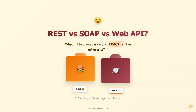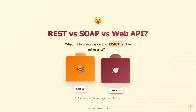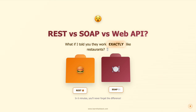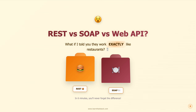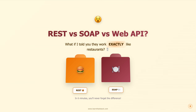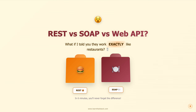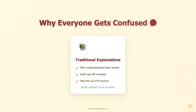REST versus SOAP versus web API — if these terms make your head spin, you're not alone. I've been there, staring at documentation, drowning in technical jargon, wondering why something so fundamental has to be so confusing. But what if I told you that APIs work exactly like restaurants? Not kind of, sort of like restaurants, but exactly like them. In the next few minutes, you're going to understand APIs so clearly you'll never forget the difference.